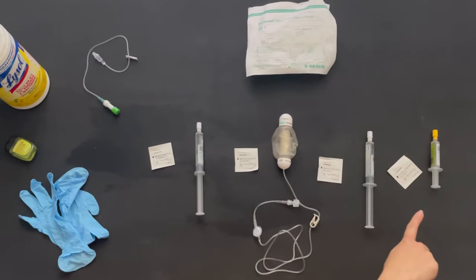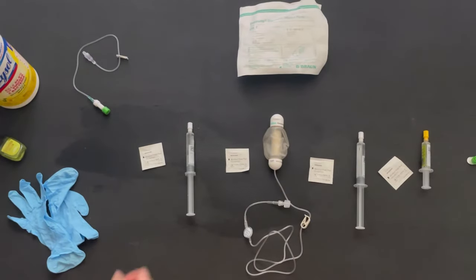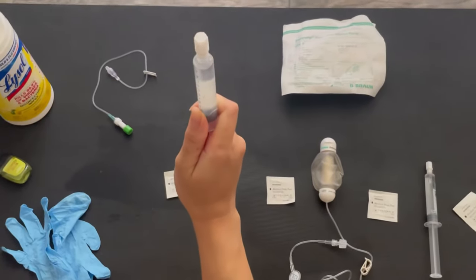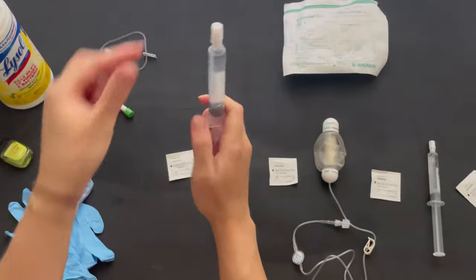You have your flush, your medicine, your flush, and then your heparin, in that order from left to right, and then simply prime your syringe like this.